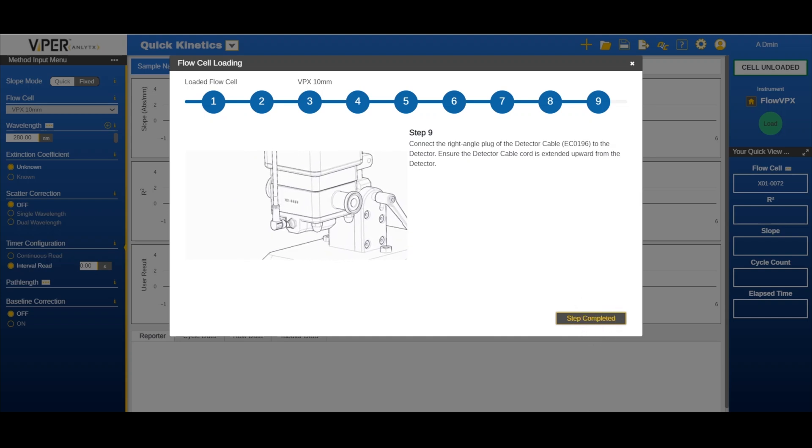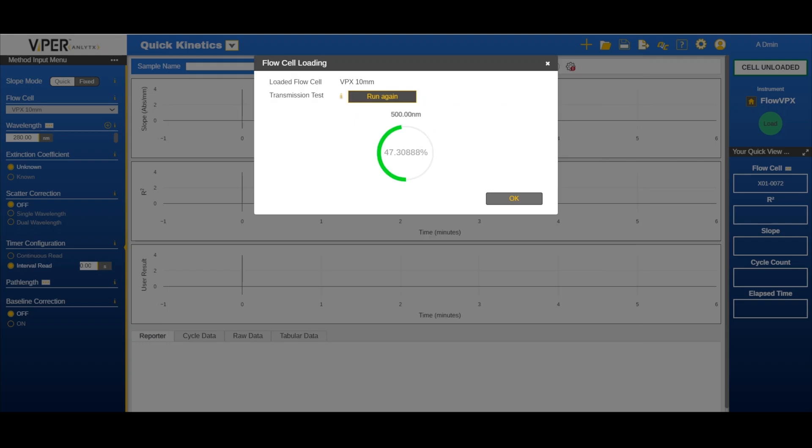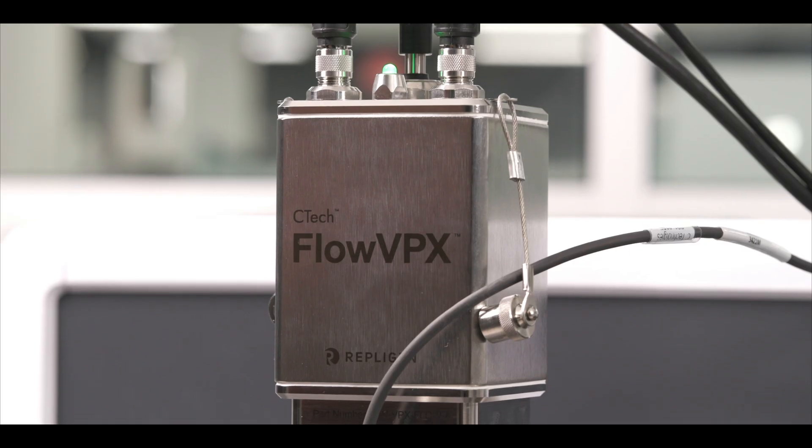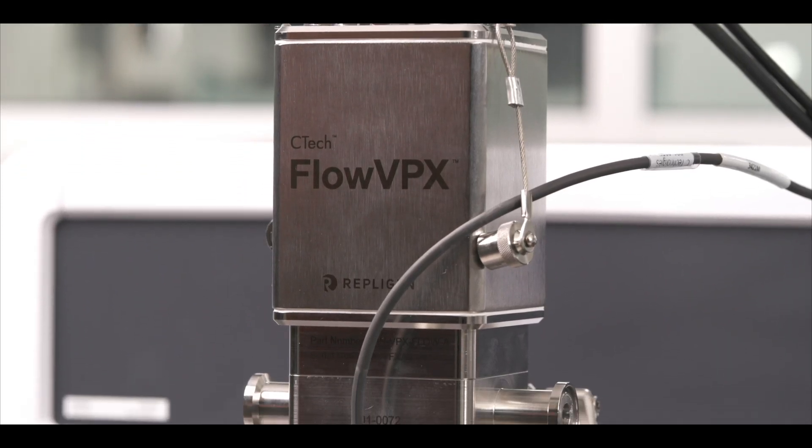The FlowVPX system will now collect your transmission test results, then display them on the screen. Once the check is successfully completed, click OK. If the transmission check fails, refer to our general troubleshooting video. Congratulations, you now have successfully loaded the flow cell.